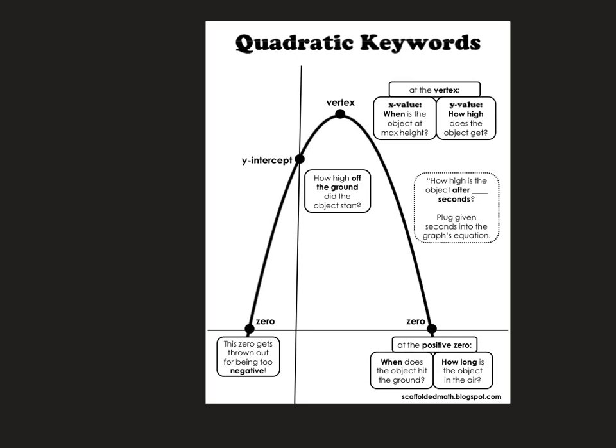Here is a quadratic keywords reference sheet. A quadratic gives a parabola. The y-intercept is where it crosses the y-axis — how high off the ground the object started. The zeros: the left one is negative and gets thrown out since you can't have negative time. The positive zero tells you when the object hits the ground and how long it was in the air. At the vertex, the x-value is when the object is at maximum height, and the y-value is how high it gets. You can also find height after a specific number of seconds by plugging into the equation.